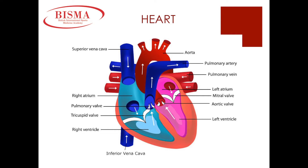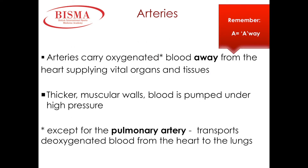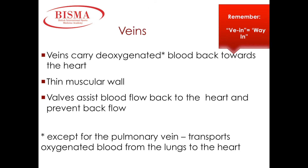Remember, our heart is a muscle and it also has its own blood supply via the coronary arteries. Arteries carry blood away from the heart and they carry oxygenated blood. Veins carry deoxygenated blood towards the heart.